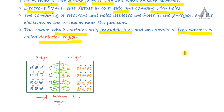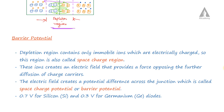The region around the junction, after recombination, will not have any free charge carriers. This region, which contains only immobile ions, is called the depletion region.